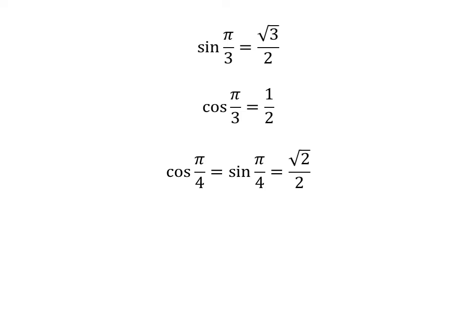As we know, sin of pi upon 3 is equal to square root of 3 upon 2, cos of pi upon 3 is equal to half, and cosine of pi upon 4 is equal to sin of pi upon 4 is equal to square root of 2 upon 2. So we plug in these values in the above equation.